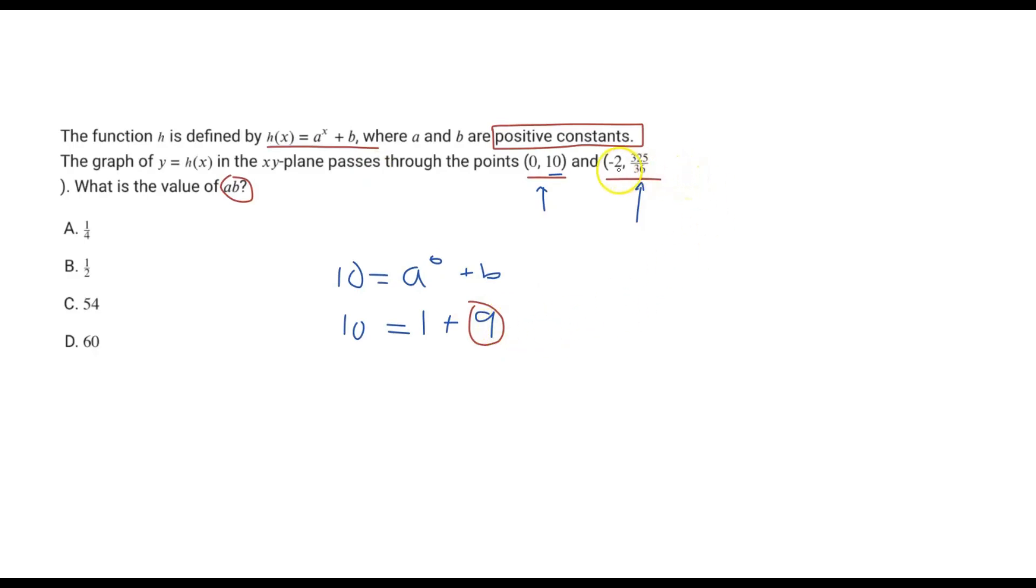Now what we want to do is tackle the second part. The second part here is (-2, 325/36). Let's see what we can do here now that we know what the b value is. We know the output is going to be 325/36.